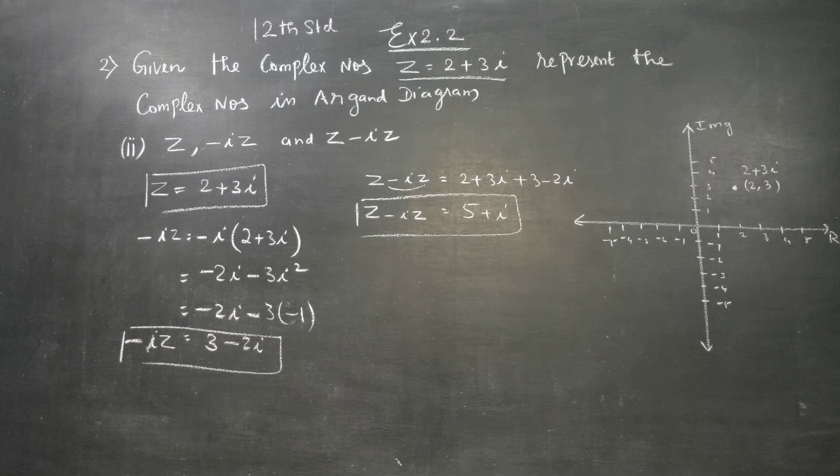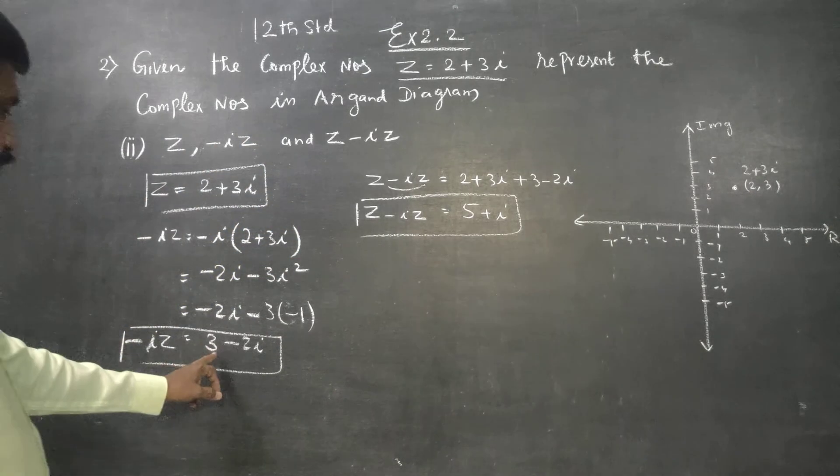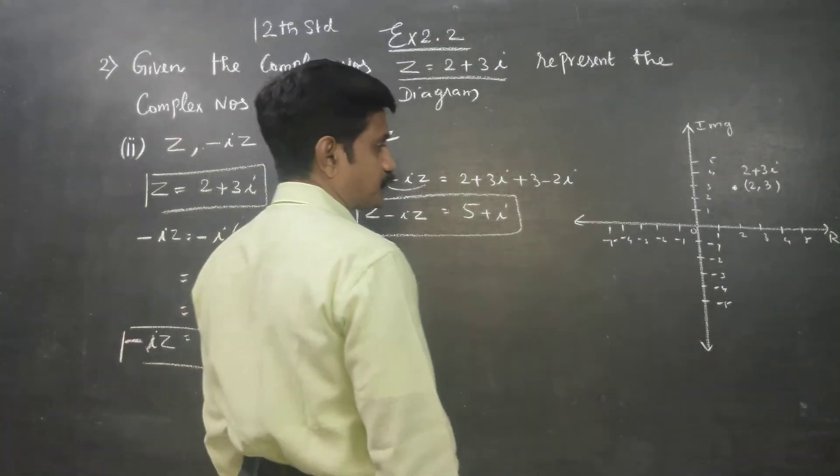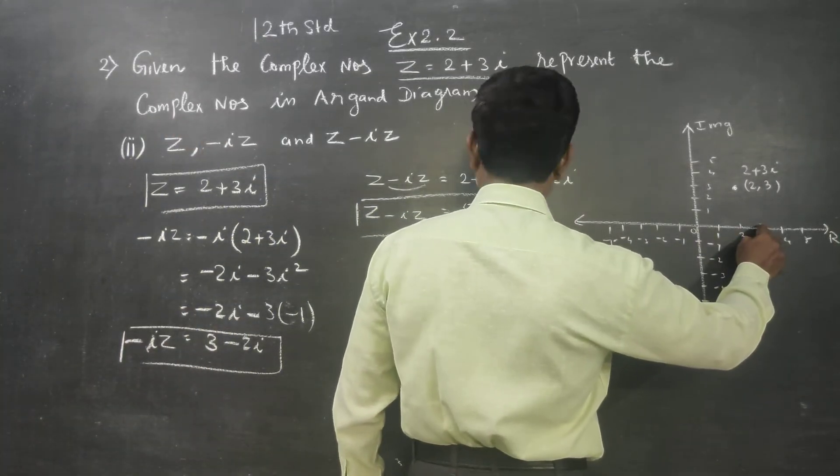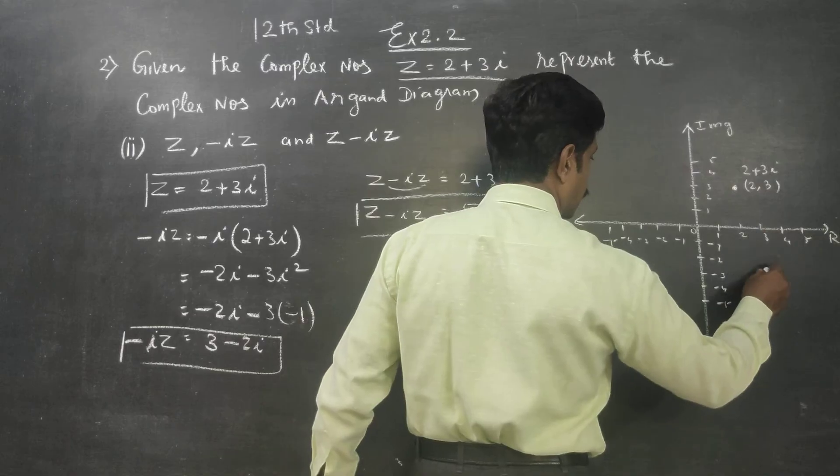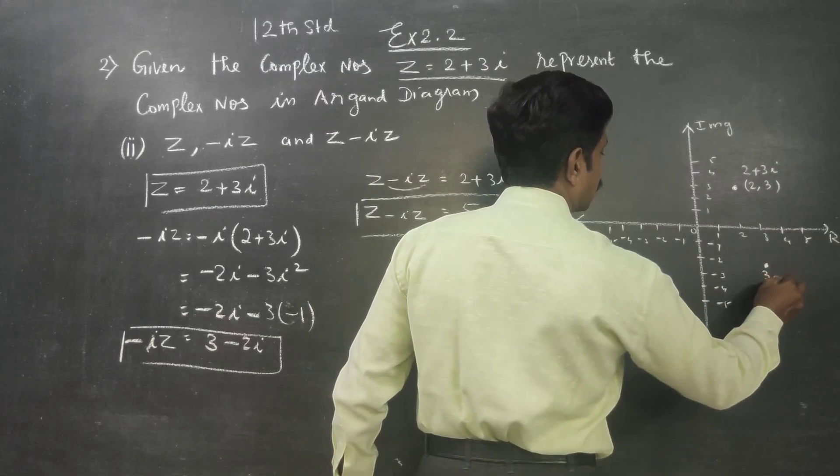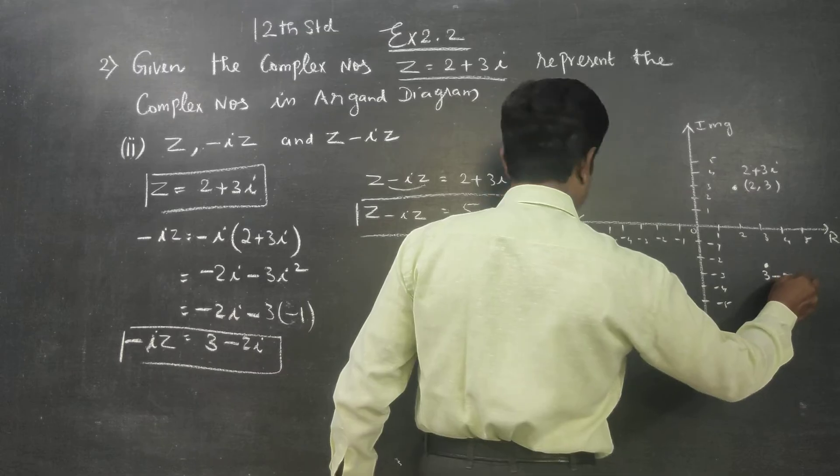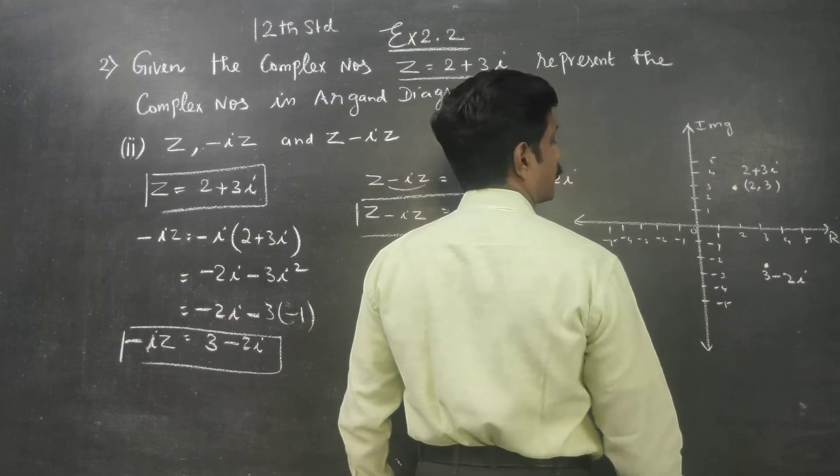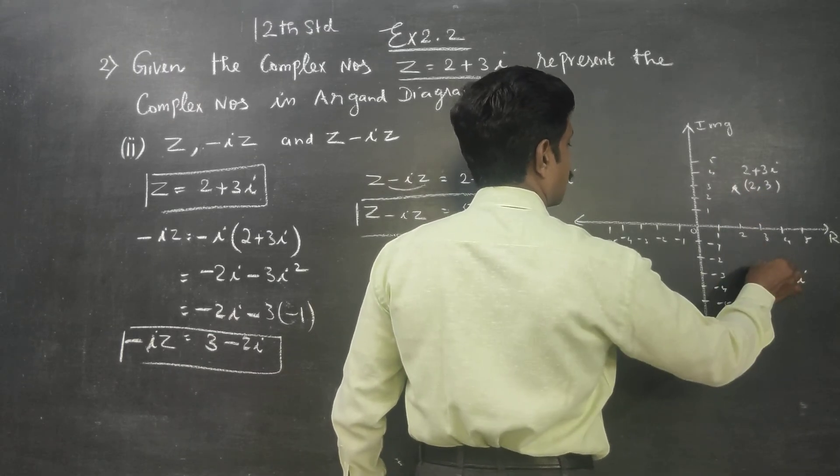Second point: 3 minus 2i. 3 in the direction, 3 minus 2i. So if you want to draw, 3 minus 2i—this is the first and the second point.